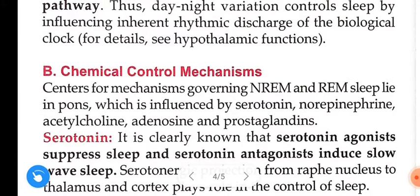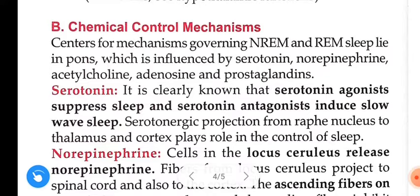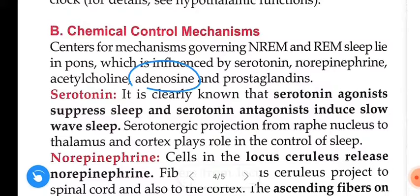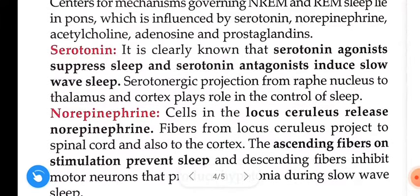Chemical control mechanism: centers for non-REM and REM sleep lie in the pons, which is influenced by serotonin, norepinephrine, acetylcholine, adenosine, and prostaglandins. Serotonin: serotonin agonists suppress sleep and serotonin antagonists induce slow wave sleep. Serotonin projections from the raphe nucleus to the thalamus and cortex play a role in the control of sleep.